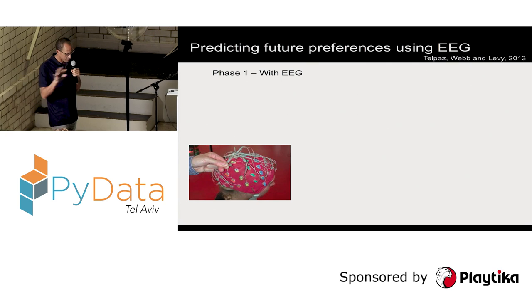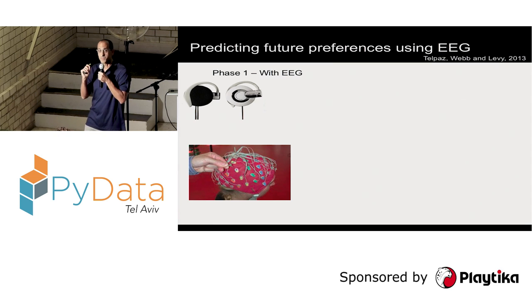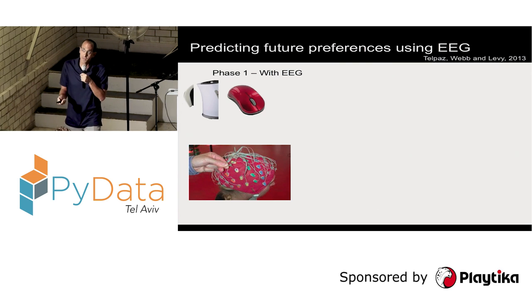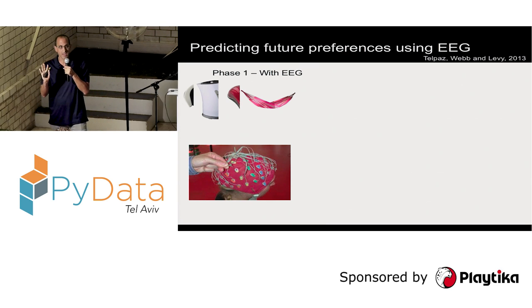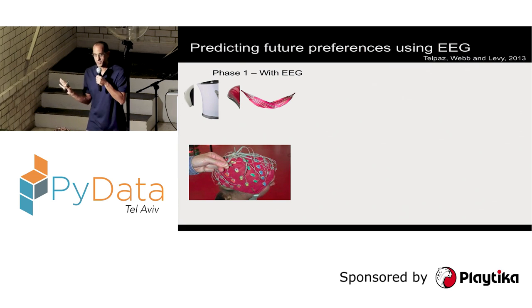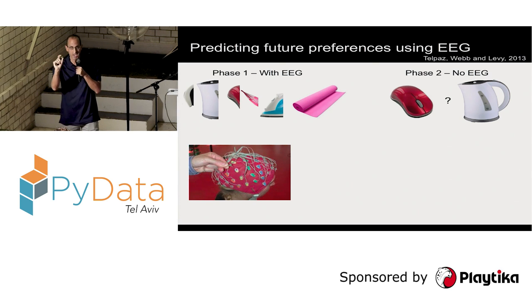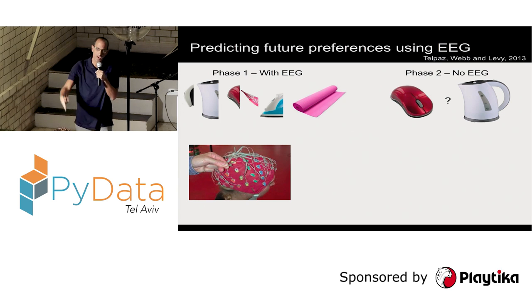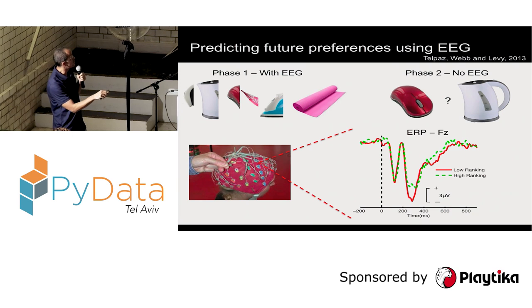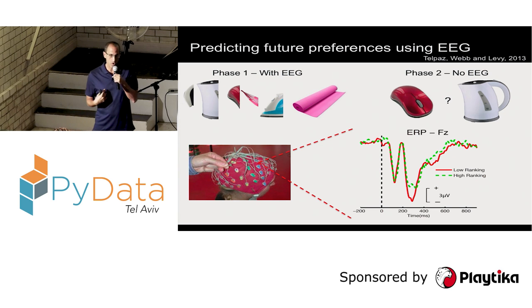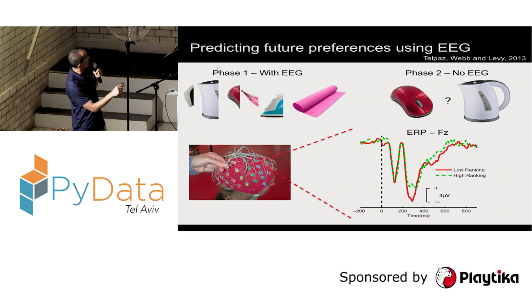The goal was to use EEG to predict actual marketing success and subjects' future choices. We did a simple experiment: subjects looked at products and were asked to just think about how much something was worth to them — no behavior, nothing. Then in a following phase without EEG, they made binary choices about what they preferred, and their preferences were rank ordered. By decoding the EEG data, we were able to separate between the preferred and non-preferred options from choices made around 20 minutes after the first stage.